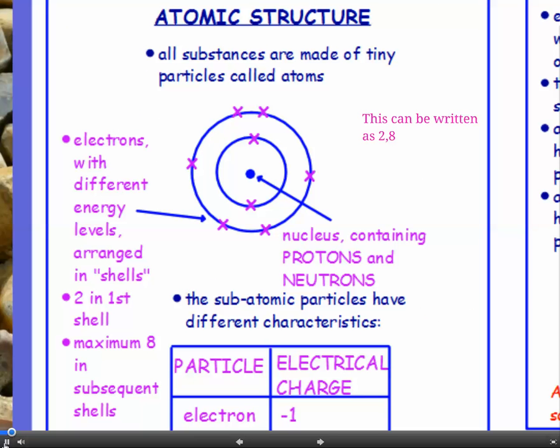Atomic structure. All substances are made of tiny particles called atoms, and here's the diagram of an atom. In the middle, we have the nucleus, which contains protons and neutrons.